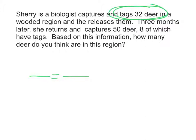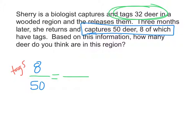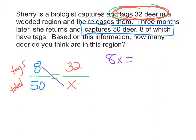There are 32 deer that have tags, but we'll save that for a bit later. Focusing on when she returns: she captures 50 deer, eight of which have tags. So the top of the proportion is the tagged count and the bottom is the total. Since they tagged 32 total deer in the woods, the 32 goes across from the eight, and X — the total population — goes on the bottom with the totals. We do our cross products: 8X equals 50 times 32, which gives us 1600.